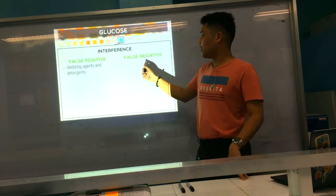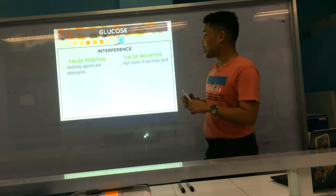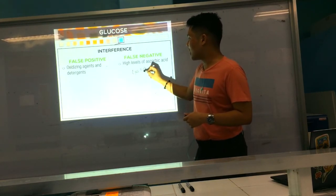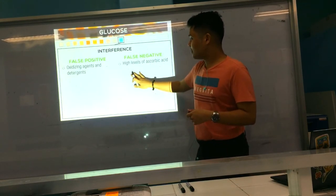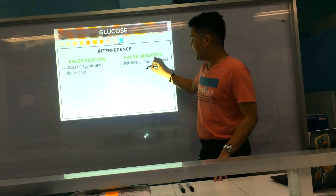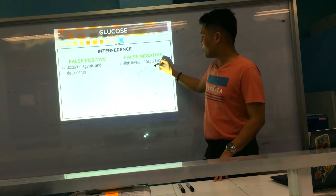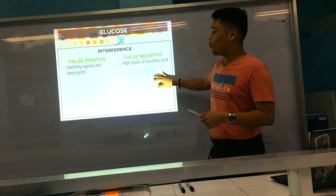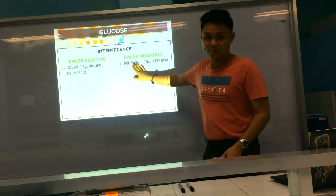For false negatives, high levels of ascorbic acid are a cause. Ascorbic acid is a reducing agent — the opposite of an oxidizing agent. Therefore, it cancels out glucose oxidase, preventing it from working. Hence, no reaction takes place and the result is a false negative.